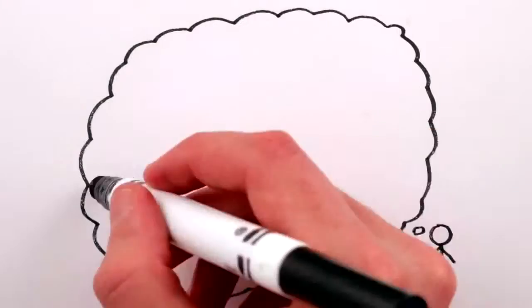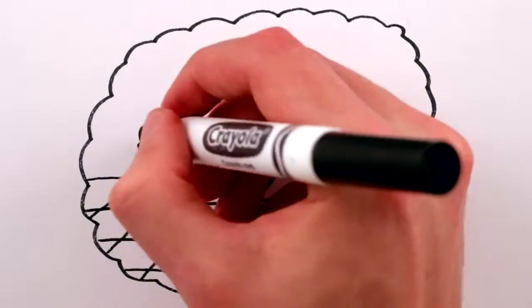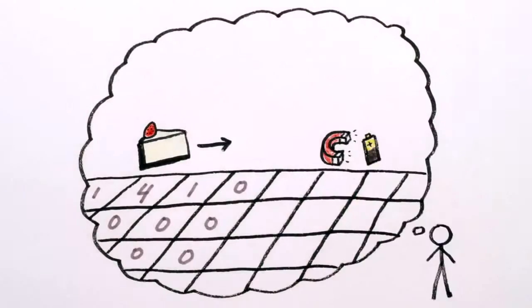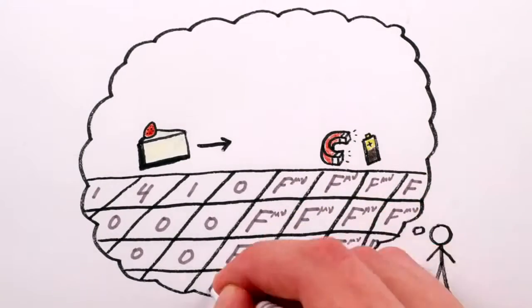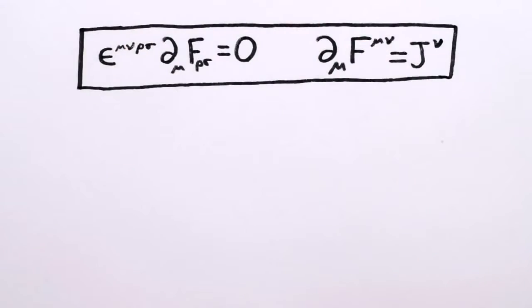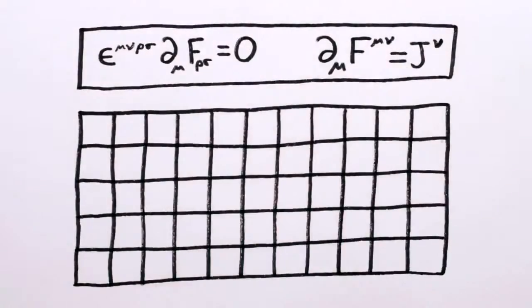So young JC realized that at every point in space, in addition to a number telling you the flow of strawberry cheesecake there, there are also numbers telling you the strength and direction of the electromagnetic field. The mathematical equations he used to describe these numbers also relate how the strength of the field at one point in space affects the strengths at nearby points.